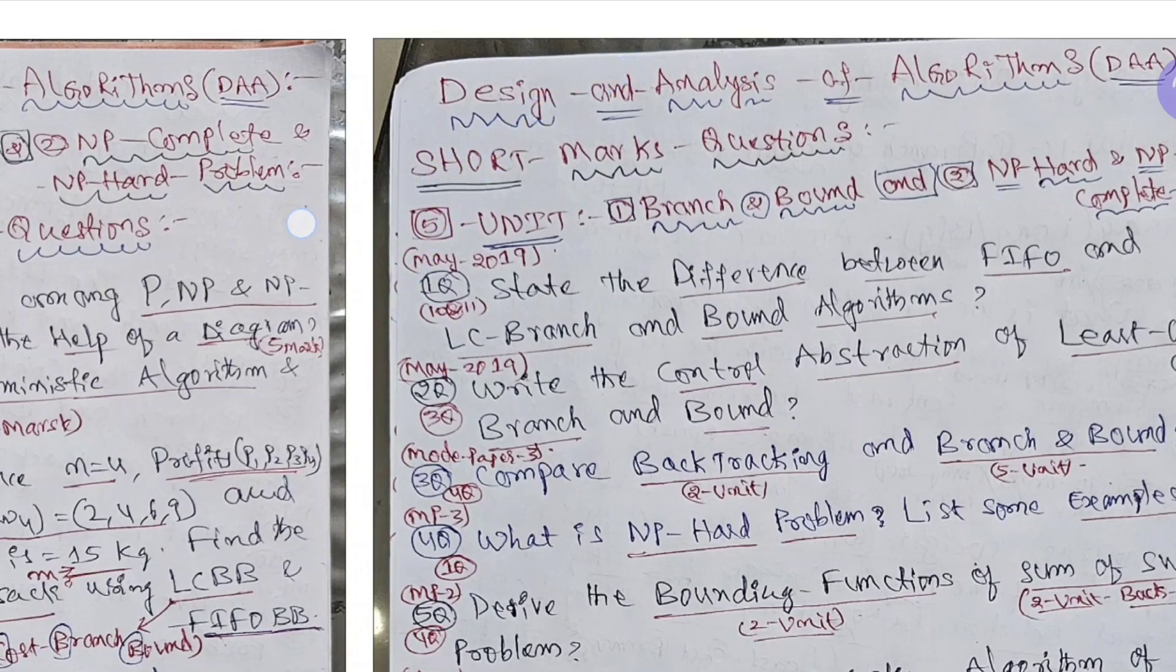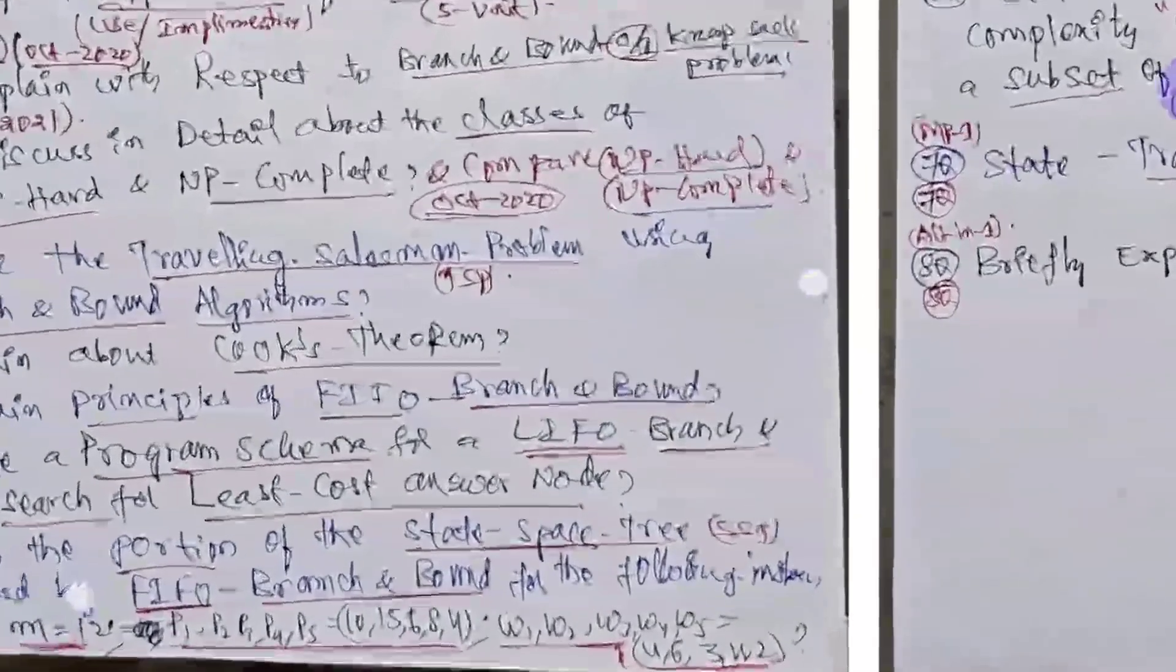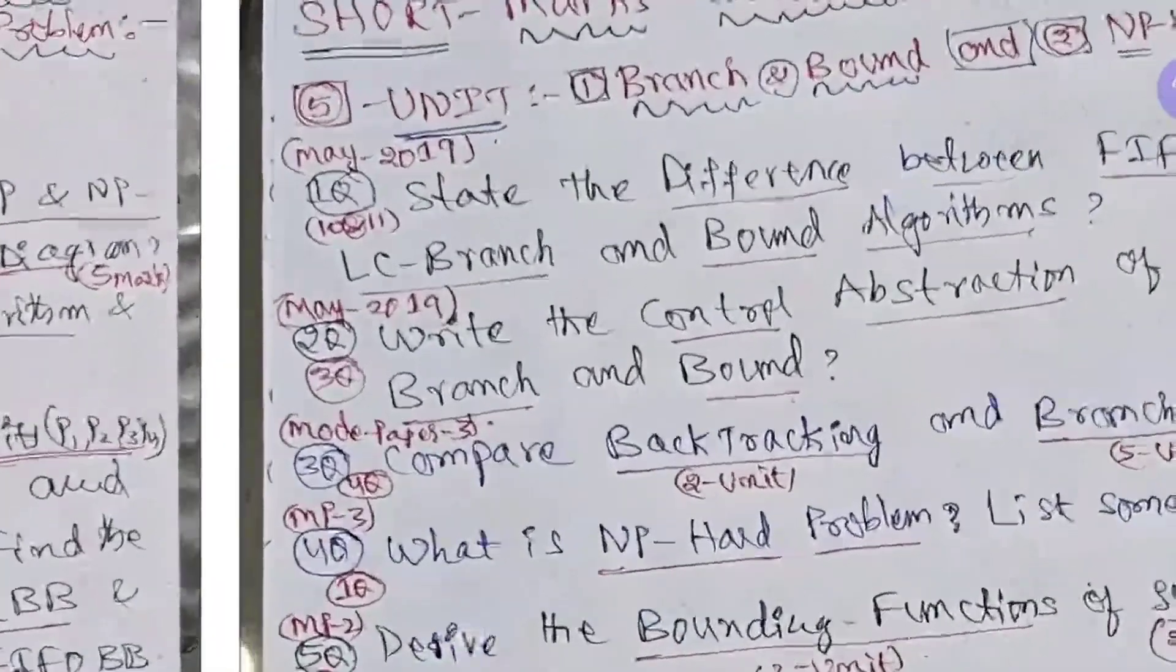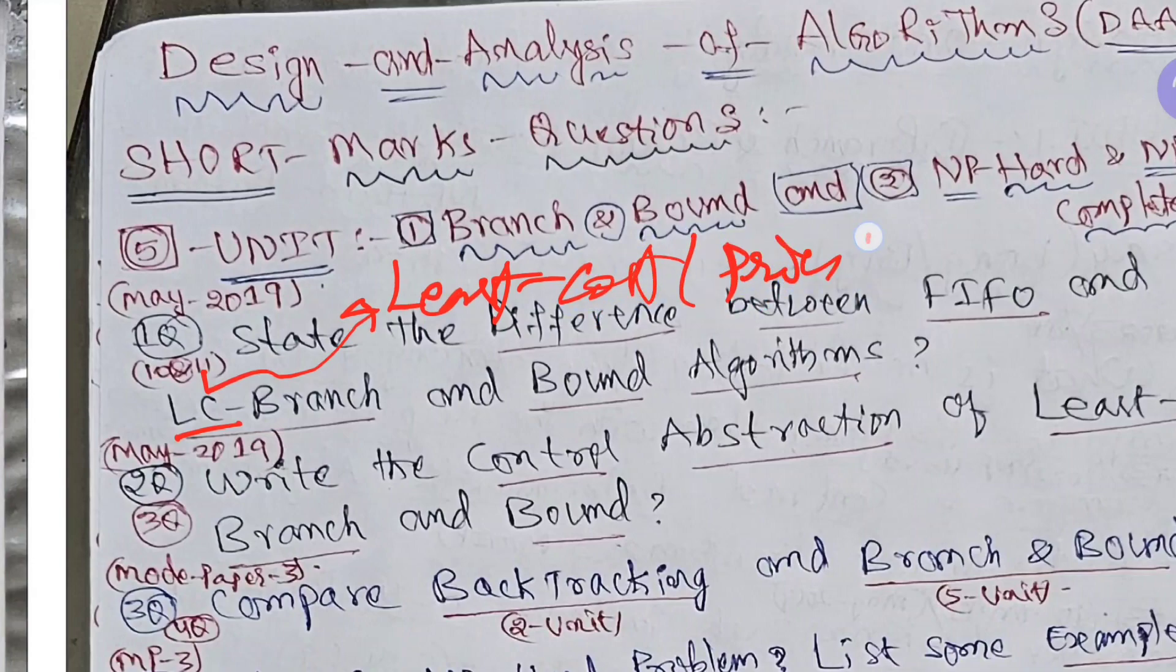That's why I am telling, if you read mostly all essay questions, short questions we will also cover. But writing some of the short questions you need to have some common sense. See with a cursor I will explain. Same DAA subject short questions. We are having 15 chapters. Those are branch and bound and NP hard and NP complete. See, this was asked in May 2019 and also there in 10th and 11th essay question same question is there. See here 10th and 11th. The short question is what is the difference between FIFO and LC branch and bound. Least cost, LC means least cost, means price, less price branch and bound algorithm. This is a basic thing. I will give you my notes. This video I have not suited.